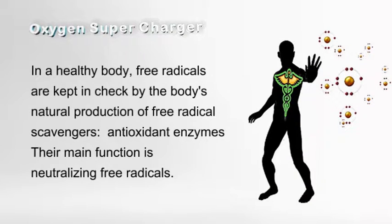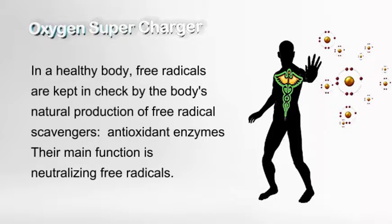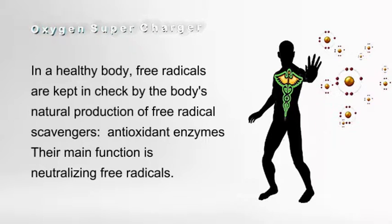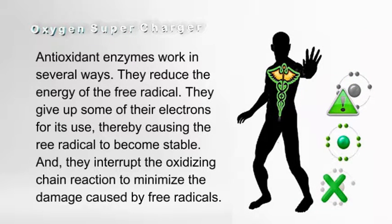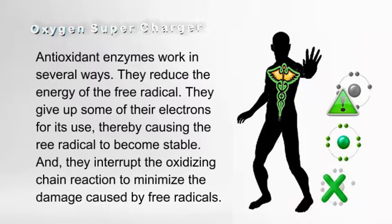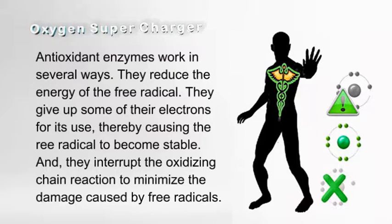In a healthy body, free radicals are kept in check by the body's natural production of free radical scavengers — antioxidant enzymes. Their main function is neutralizing free radicals. Antioxidant enzymes work in several ways: they reduce the energy of the free radical, they give up some of their electrons for its use, thereby causing the free radical to become stable, and they interrupt the oxidizing chain reaction to minimize the damage caused by free radicals.